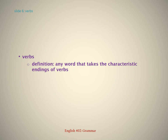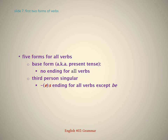Verbs. Definition: Any word that takes the characteristic endings of verbs. Five forms for all verbs. First: the base form, also known as present tense — no ending for all verbs. Second: third person singular — S or ES ending for all verbs except 'be.'